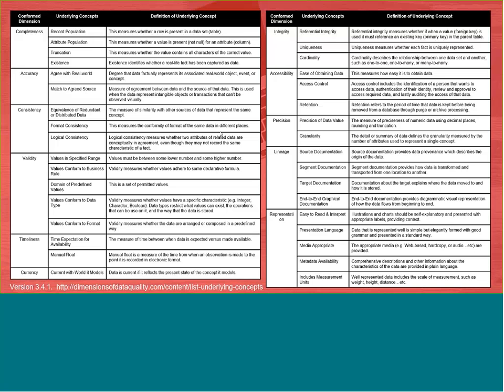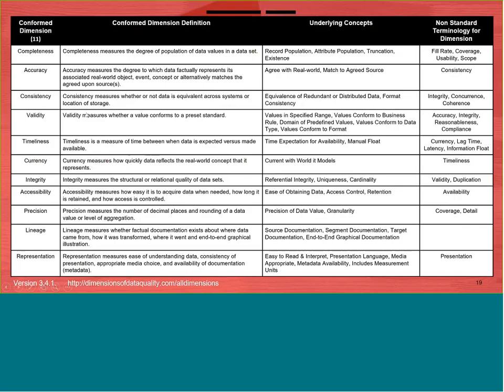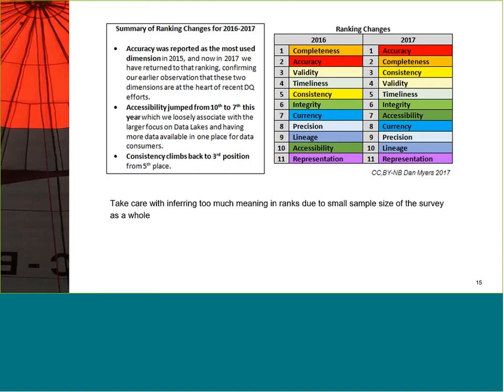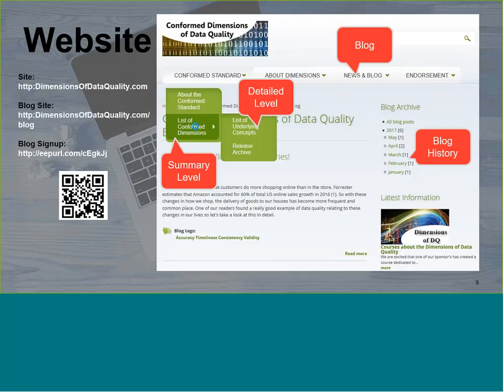Where can I find definitions for the data quality dimensions? The survey is all based on the conformed dimensions of data quality. In the white paper appendix, it lists out all those dimensions and the definitions used in the survey — but that's fixed and not up to date. You want to use the dimensionsofdataquality.com website — that's where we keep everything up to date. You can scan the QR code on screen or go to the site, and that's where the definitions are.